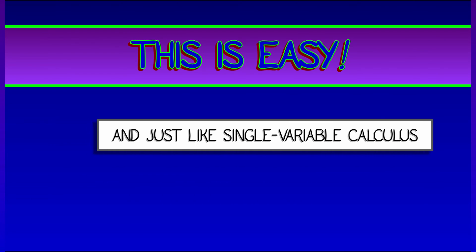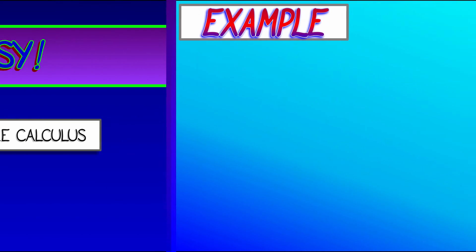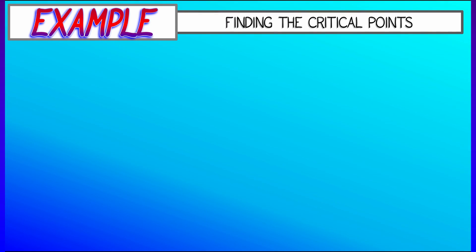Okay, so this looks like it's going to be pretty easy. This is going to be just like single variable calculus. Set the derivative equal to zero, find the critical points, boom, we're done. Well, let's see what happens when we try this.